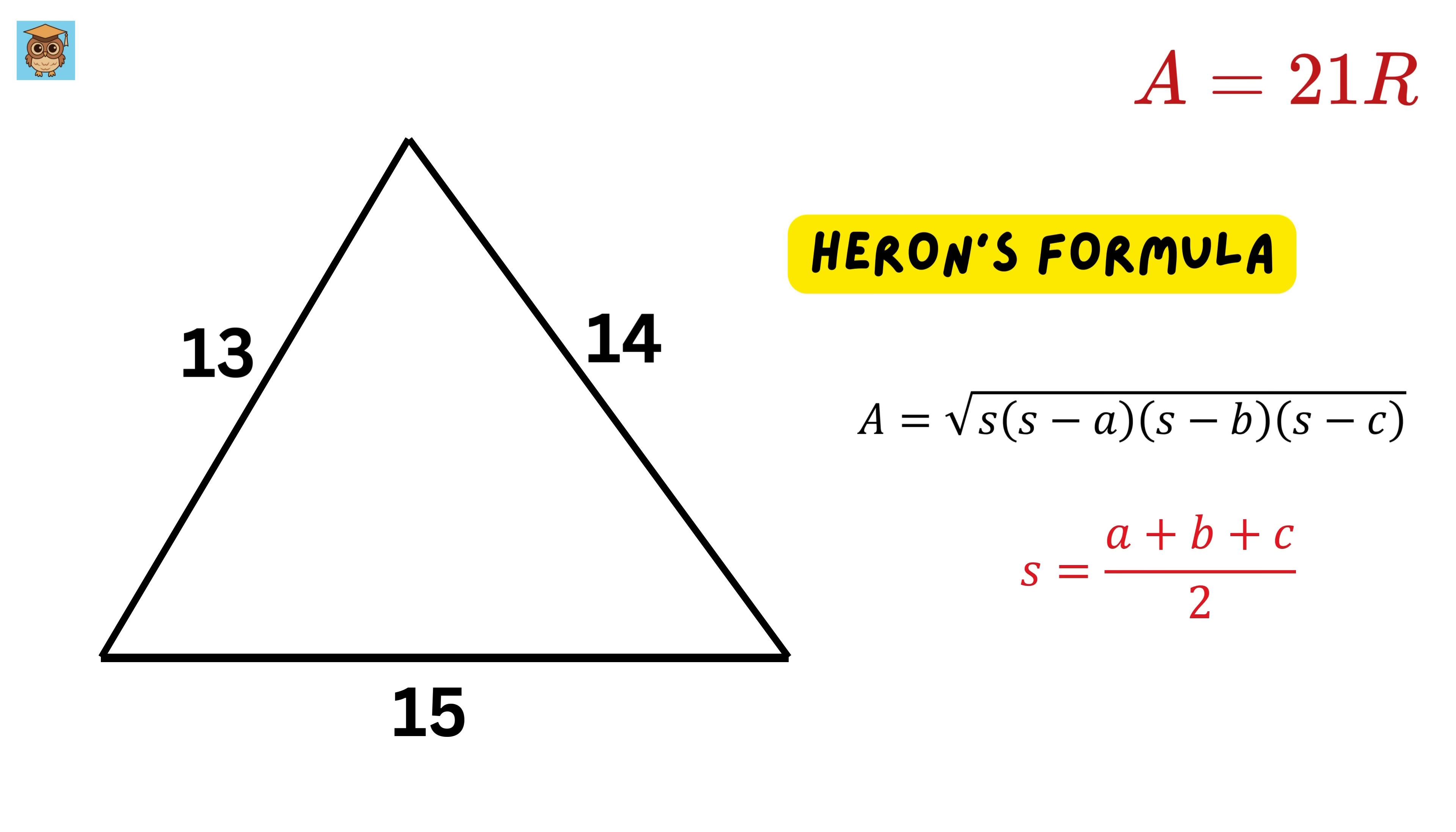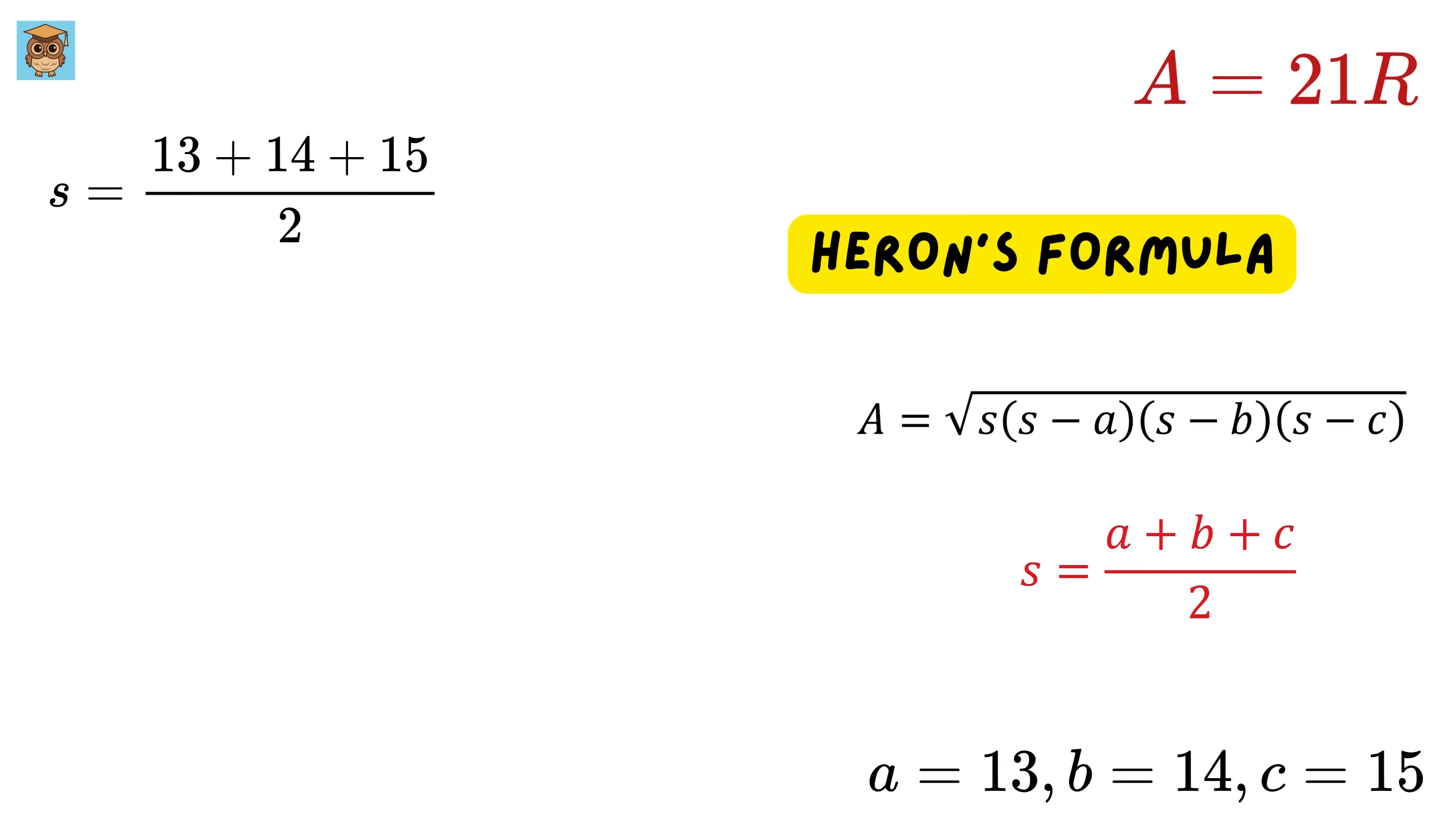For our case, let A equals 13, B equals 14, and C equals 15 units. So, S will be equal to 13 plus 14 plus 15 over 2 or 21 units. Substitute all of them into this area formula to get this. Now this will become this, and finally we get the area of this triangle as 84 square units.